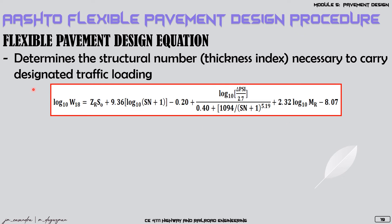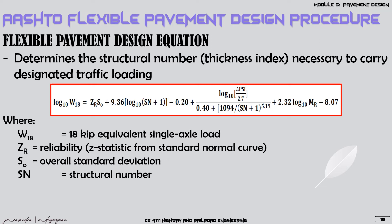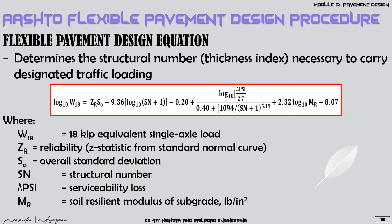The variables used in this equation include: W18, the equivalent single axle load at 18 kips; ZR, the reliability or confidence level taken from the Z statistic of the standard normal curve; S₀, the overall standard deviation; SN, the structural number or thickness index; ΔPSI, the serviceability loss, which is the difference between the initial PSI and the terminal serviceability index or TSI; and MR, the soil resilient modulus of the subgrade.